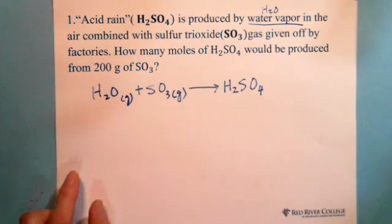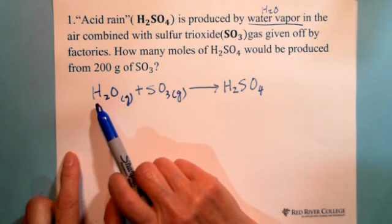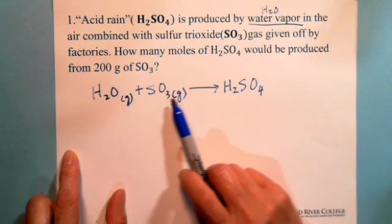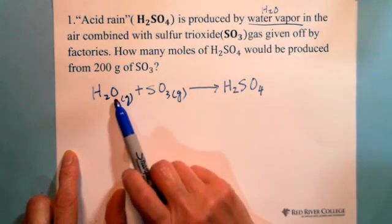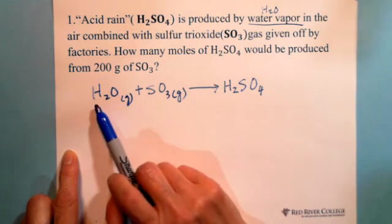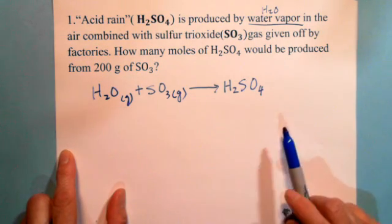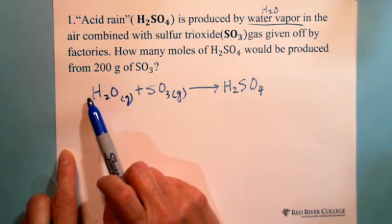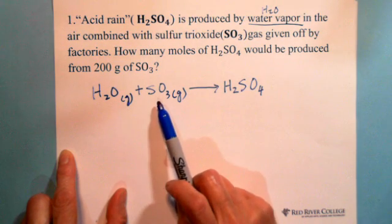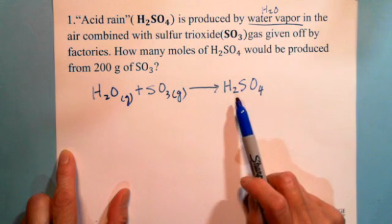We're looking for how many moles of H2SO4. Before we do this question, we already wrote down the equation. We need to check how to balance it. Before the reaction we have 2 hydrogen, after reaction 2 hydrogen. For oxygen, we have 1 and 3, so 4 oxygen total, and 1 sulfur. This equation doesn't need to be balanced again because it's already balanced. That means 1 mole of water vapor plus 1 mole of sulfur trioxide will produce 1 mole of acid rain, H2SO4.